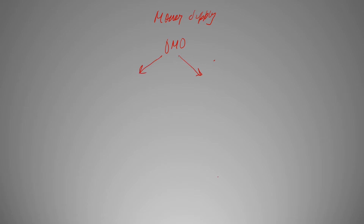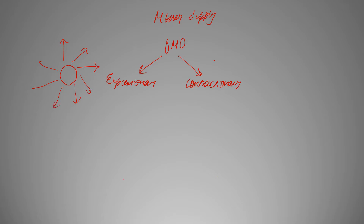We'll be continuing with the same topic which is money supply, but in this video we'll be talking about OMO. There are basically two types of things that happen in OMO: first is expansionary and second is contractionary. As the name suggests, expansionary means money supply will expand, and contractionary means money supply will contract.